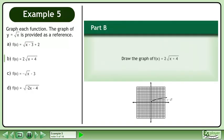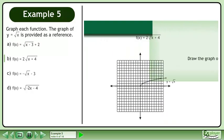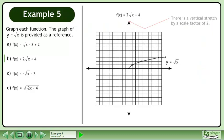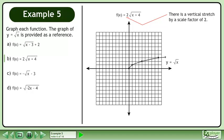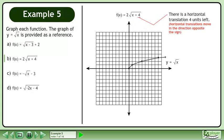In Part B, draw the graph of f equals 2 times the square root of x plus 4. There is a vertical stretch by a scale factor of 2. There is also a horizontal translation of 4 units left.